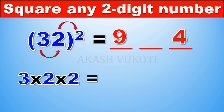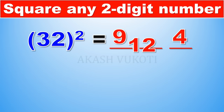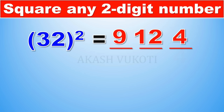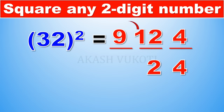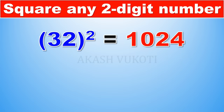The middle part is 3 times 2 times 2, which equals 12 — a two-digit number, so we'll need to carry over. We have first part 9, middle part 12, last part 4. Working from last to first: keep the 4, then from 12 take the units digit 2 and carry the 1 over to 9. 9 plus 1 is 10, so 32 squared equals 1024.